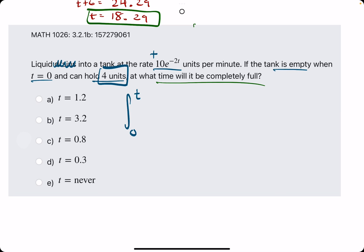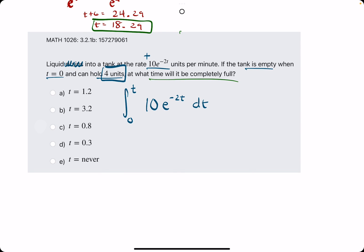We are integrating 10 e to the negative 2t dt. The anti-derivative of e to anything is that same e term, and then whatever the coefficient of the t term is within the exponent, we will divide by that number. So it's e to the negative 2t over negative 2.